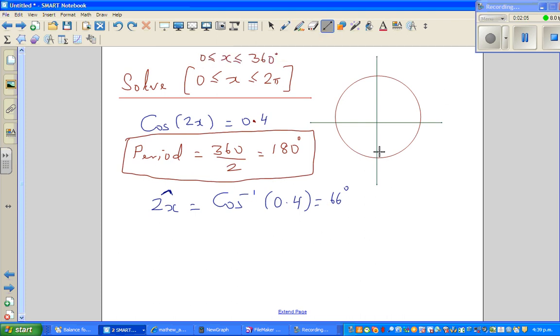So let me write the CAST formula. C-A-S-T. CAST stands for cos, all, sine, tan. So in the first quadrant, everything—sine, cos, and tan—are positive. So we're looking at cos. Cos is positive in the first and the fourth quadrant.